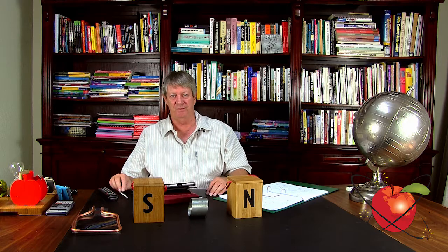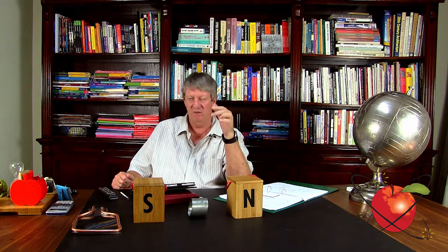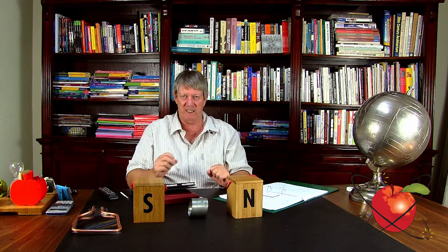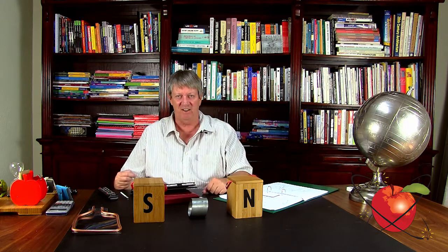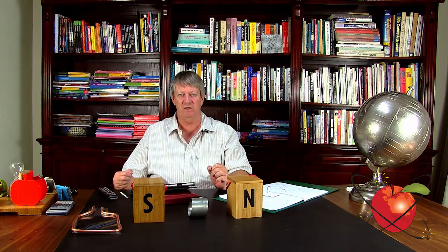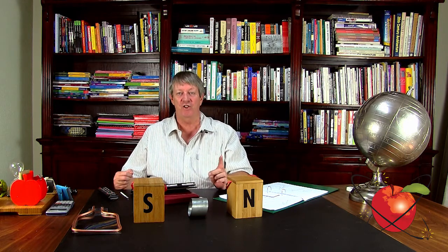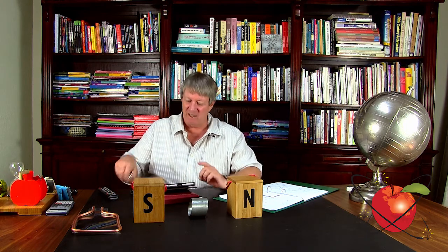A dynamo: if you've ever seen the older version of a bicycle, it's got a little tubular thing on the back that you unclip and put onto the back wheel. It's got a little thing that gets turned by the back wheel, and it spins a coil inside a magnetic field, generating electricity.